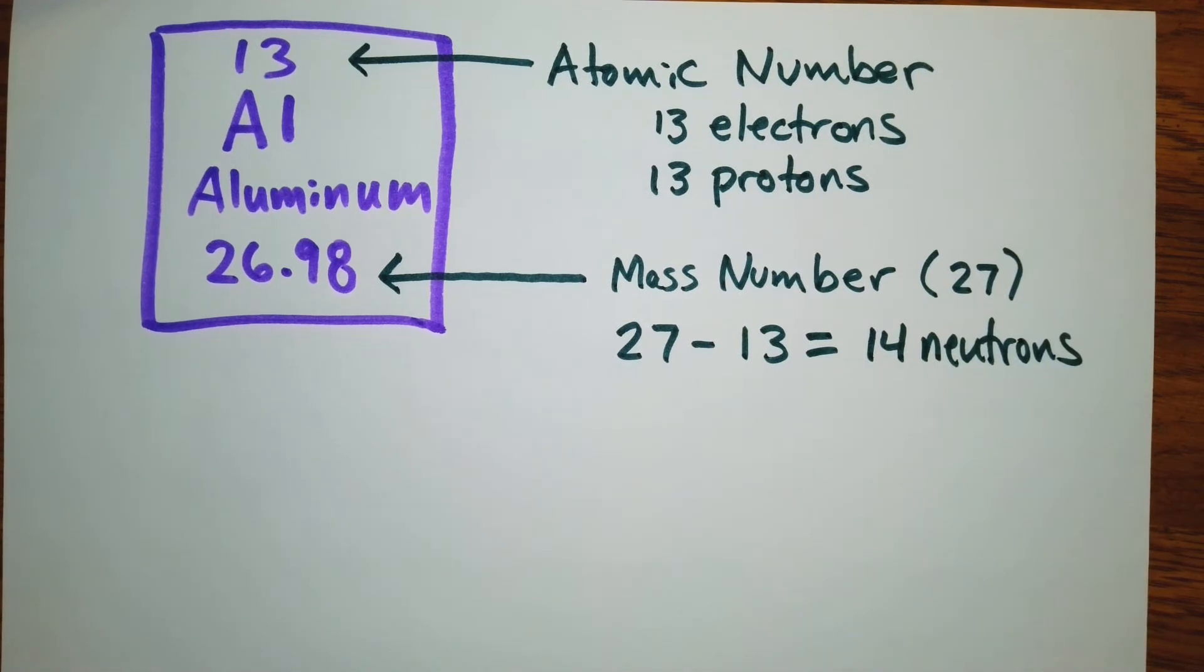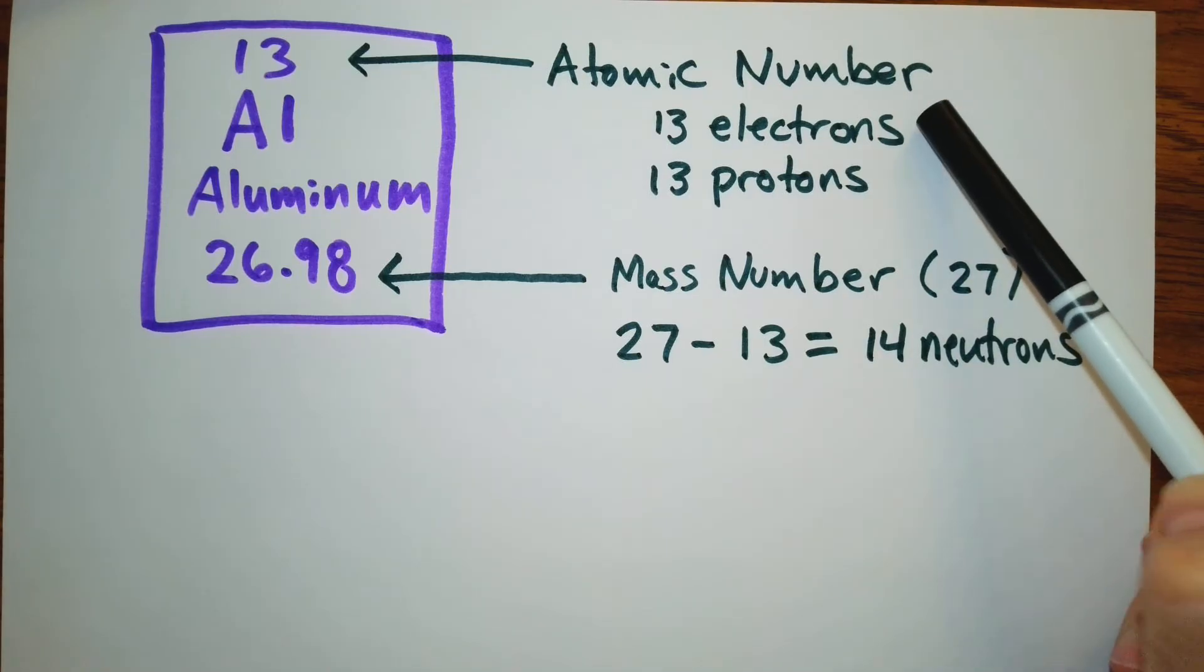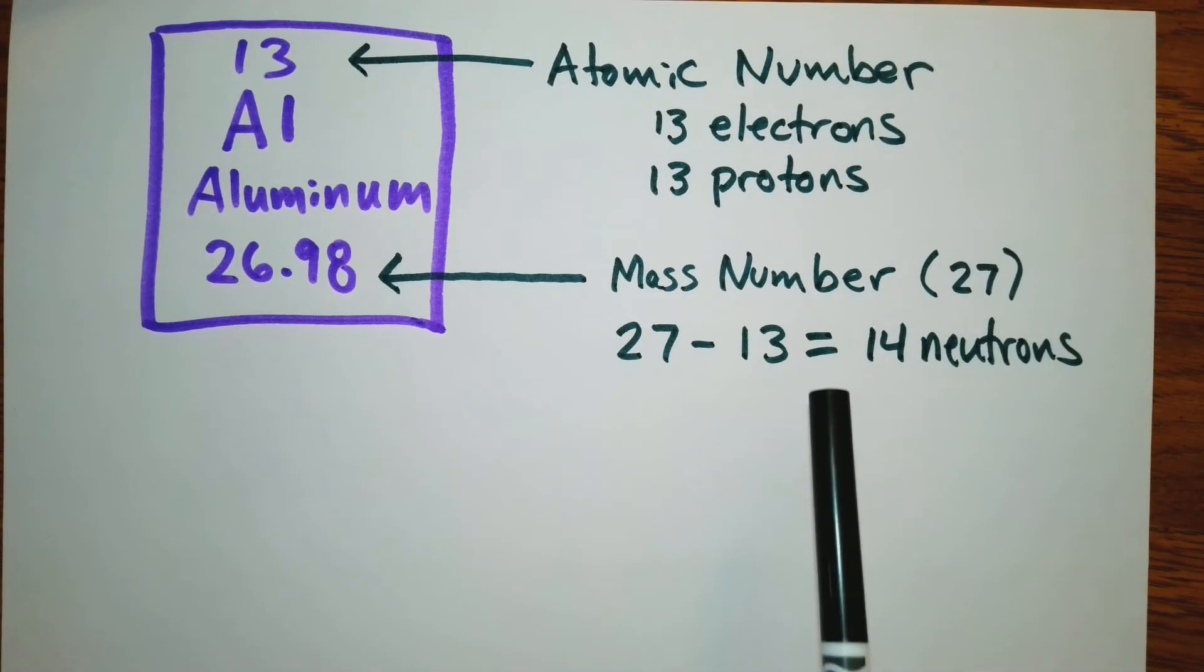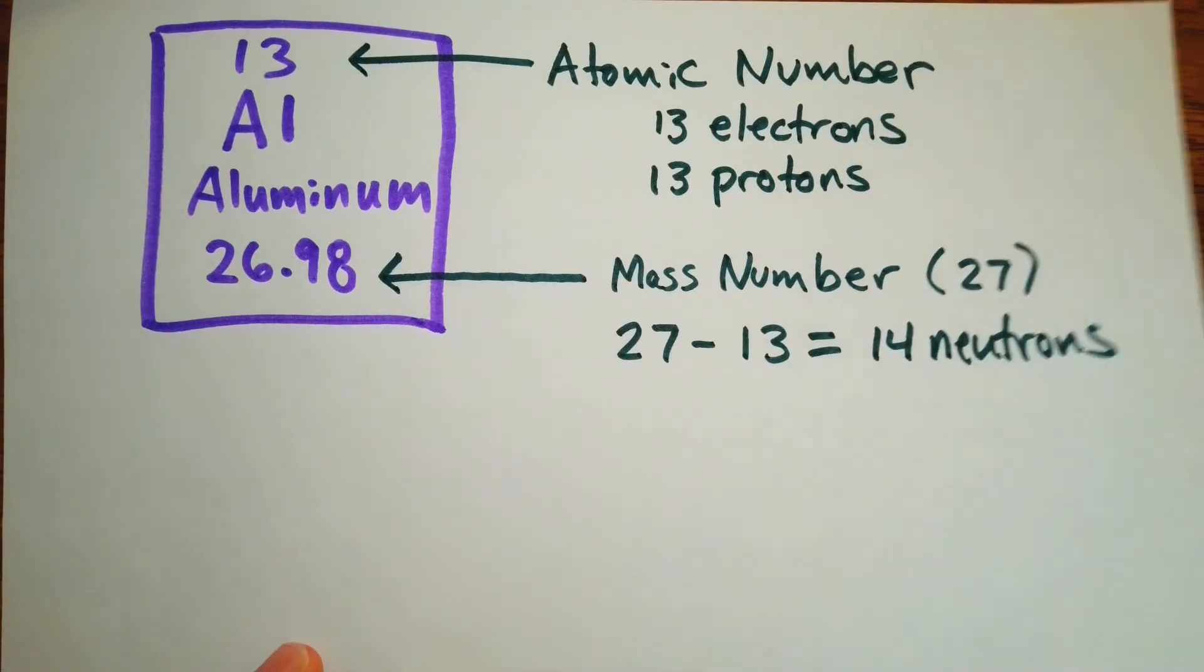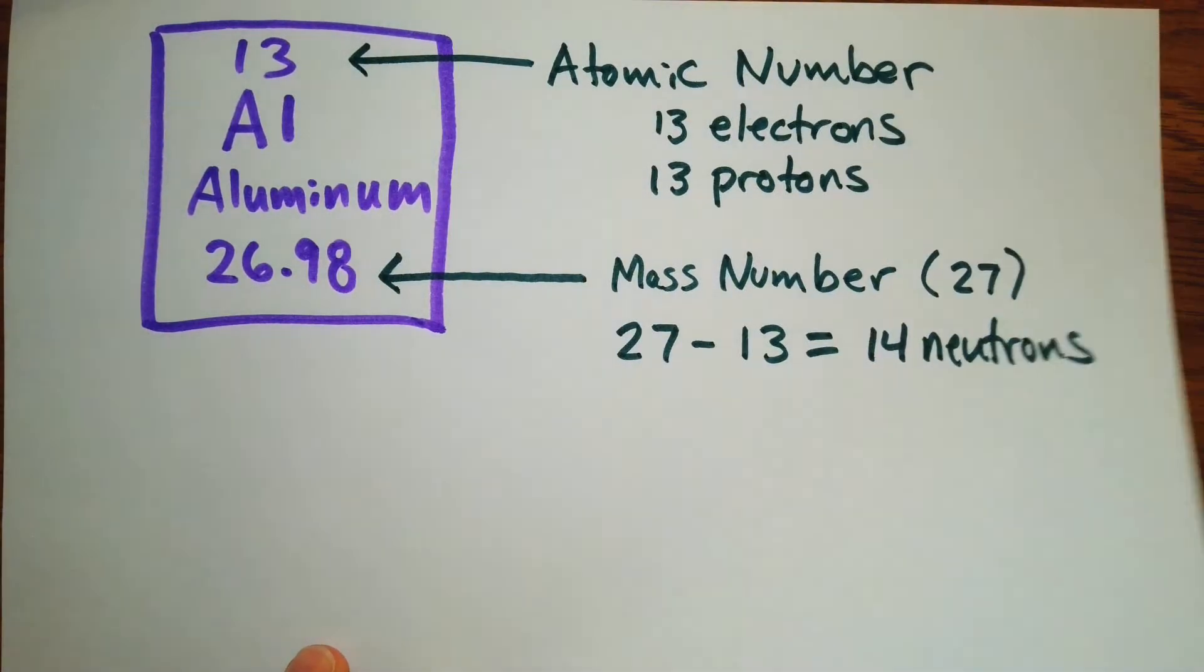And it is that simple, guys. So in here we have 13 electrons, 13 protons. To determine the number of neutrons, we do 27 minus 13 equals 14. Let's do another example.